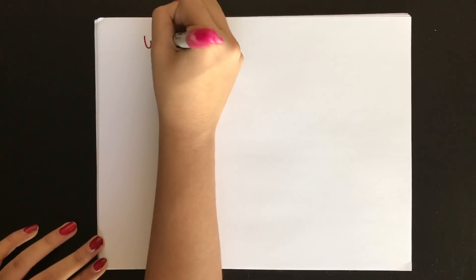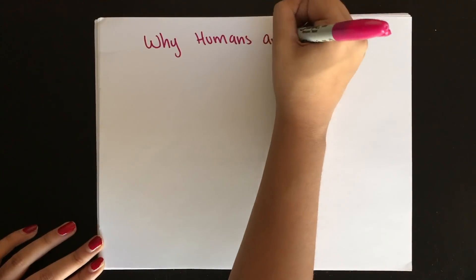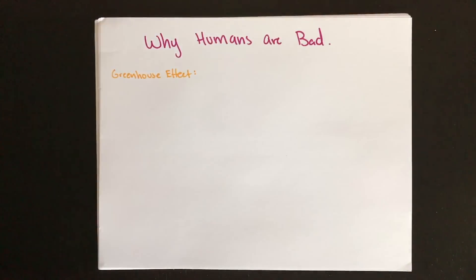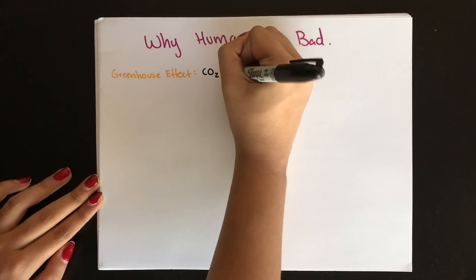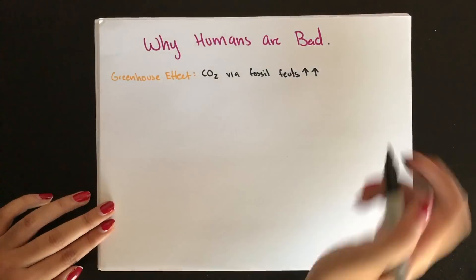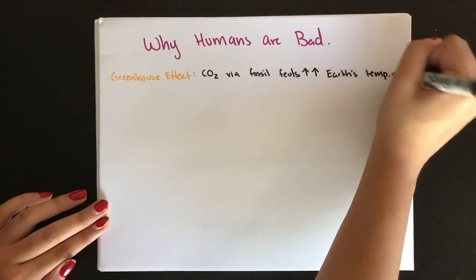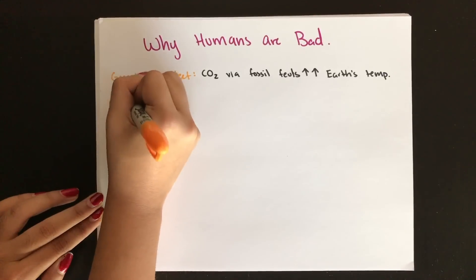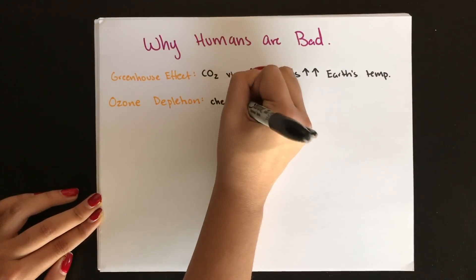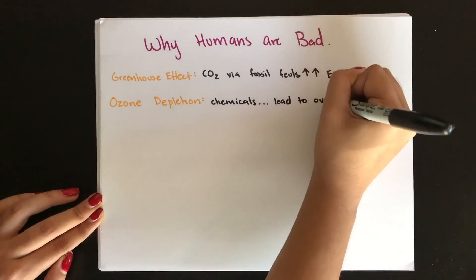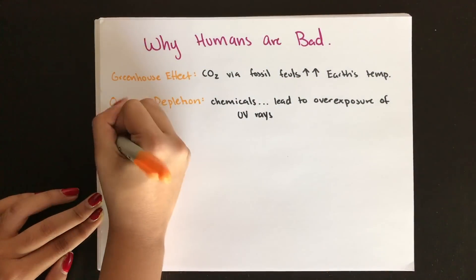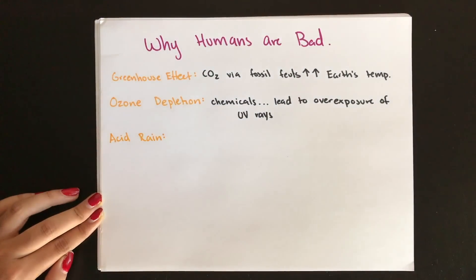Now let's talk about how humans have impacted the environment. The greenhouse effect occurs when atmospheric concentrations of carbon dioxide — via burning fossil fuels and deforestation — warm the Earth, causing glaciers to melt and changes to both animal and plant populations. Ozone depletion is caused by chemicals found in aerosol cans. The ozone layer is extremely important because it protects us from ultraviolet radiation; the more we destroy it, the more likely we all are to develop cancer.